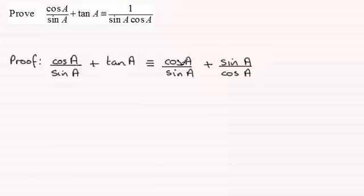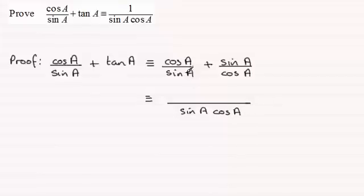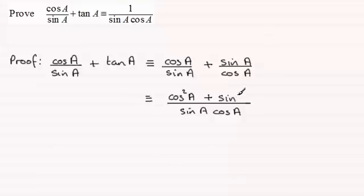Now we've got two fractions and so we need to put them over a common denominator. That common denominator will be sine a times cosine a. What do we multiply sine a by to get the top? We multiply by cosine a, so you've got cosine a times cosine a, which is simply cos squared a. Then for the second fraction, what do you multiply cosine a by to get this denominator? It's sine a, so we times the top by sine a and we get sine squared a.